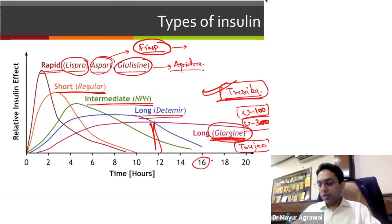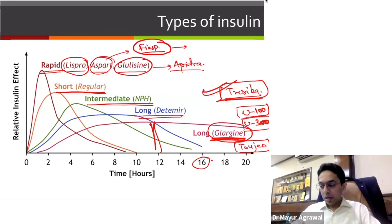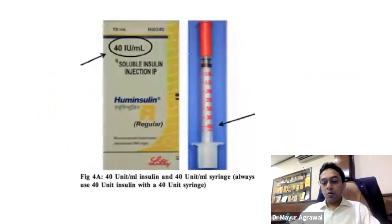These things are rapidly changing. With Toujeo U300, the flexibility is around 3 hours — so a patient can inject between 6 p.m. and 9 p.m., which is good enough. These are important points that both you and your patient must know.